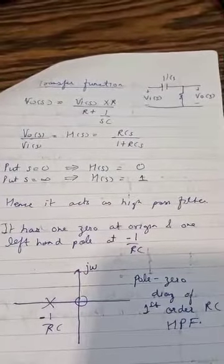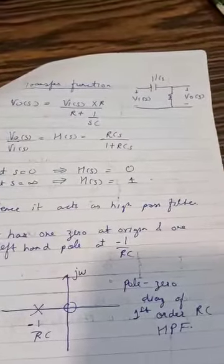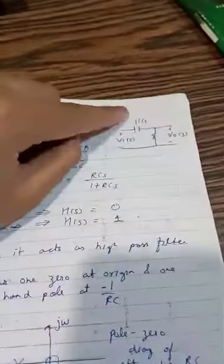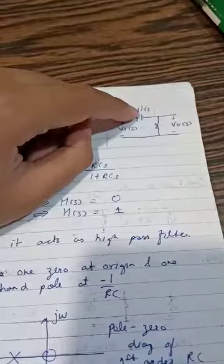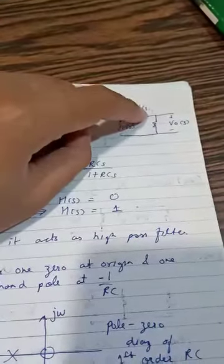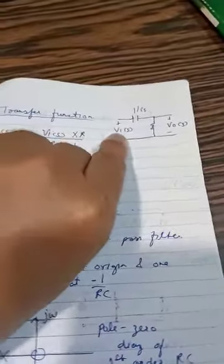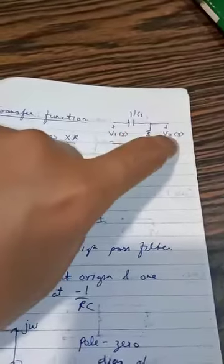In this video, we will find the transfer function of an RC high pass filter. In this capacitor is replaced by its Laplace equivalent 1 upon CS. This is input voltage VI, this is resistor R, and here it is output voltage.